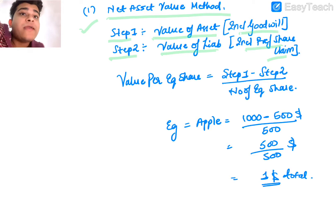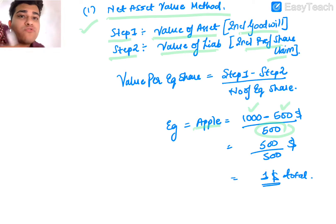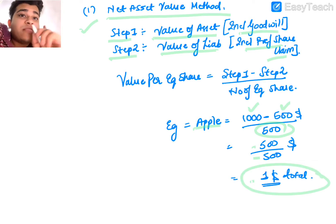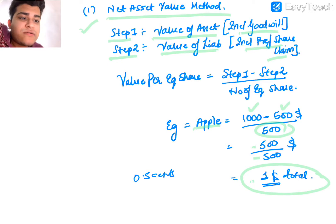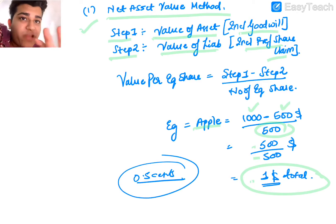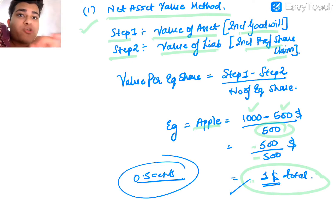Assets less liabilities divided by number of equity shares gives us the net asset value per share. For example, if assets are $1,000, liabilities are $500, and number of shares is 500, then net asset value per share = $500 ÷ 500 = $1 per share. If the market price is $0.50, then the share is undervalued. In this case we should buy the share, because the market price is $0.50 but the theoretical valuation is $1.